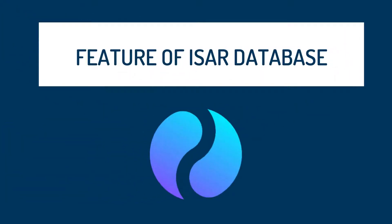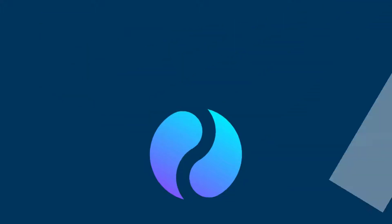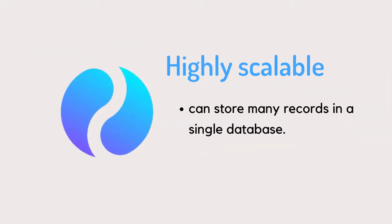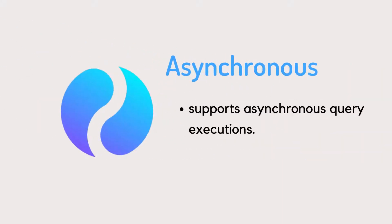In addition to all of that, ESA has specific features built into it. It's highly scalable, meaning it can store hundreds of thousands of records in a single database. It also supports asynchronous query executions. What this means is that when a query call is executed, a future is created that waits for the response from the database and returns the response once it is ready, without having to block other query calls. This allows high database throughput, which scales up the performance of the system.